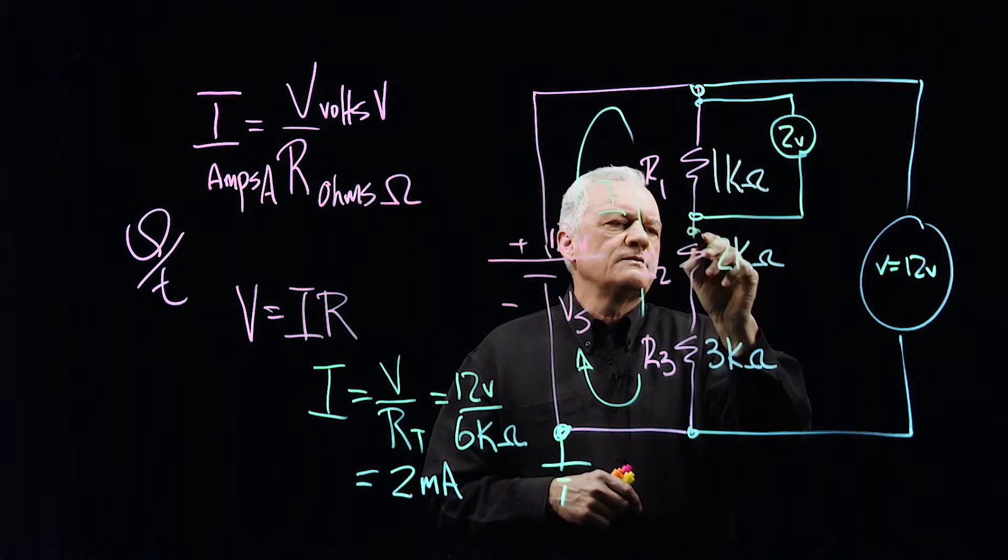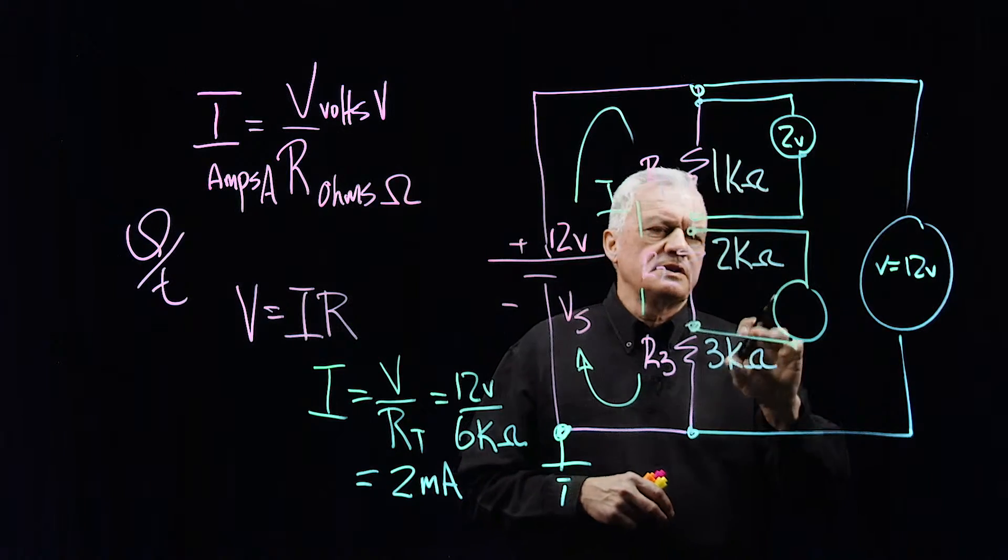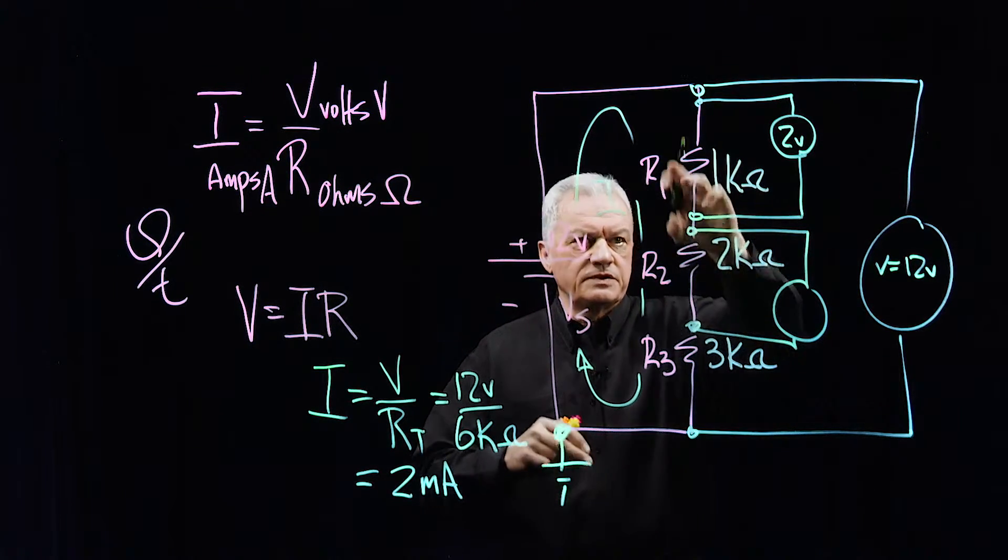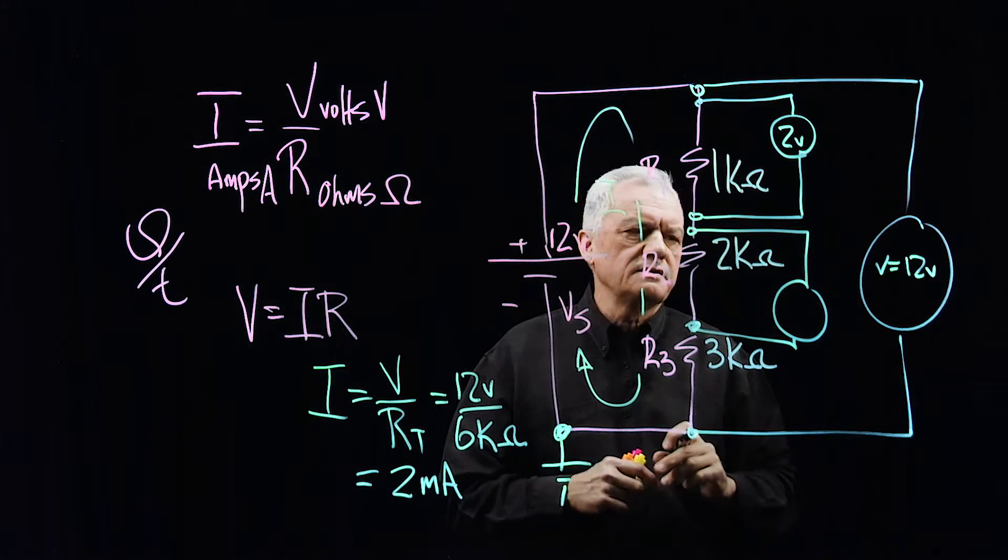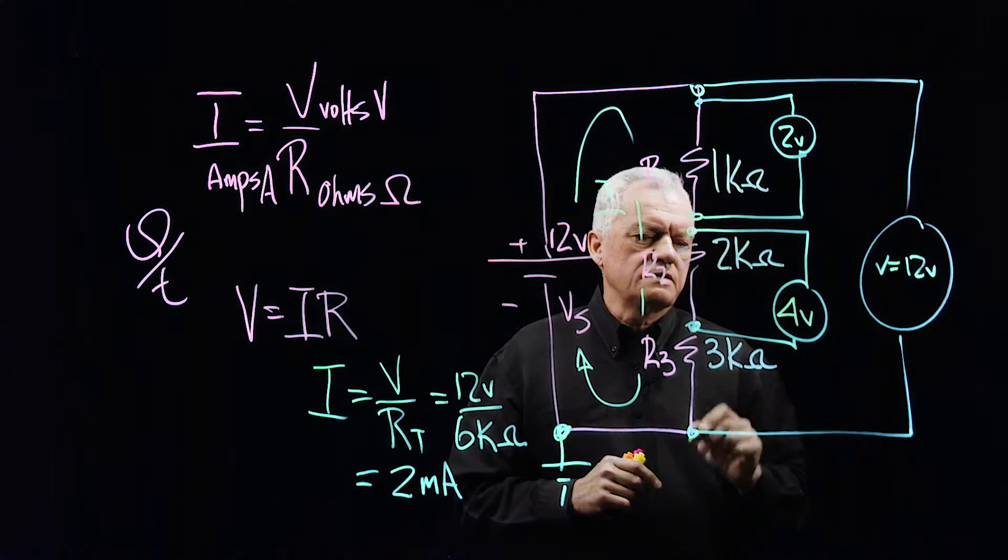And if we connect a voltmeter this side here, what is this voltage across the 2,000 ohm resistor? Well, 2 milliamps times, same current has to go through all resistors, 2 milliamps times 2,000. 2 times 10 to the minus 3 times 2 times 10 to the 3, 4 volts.